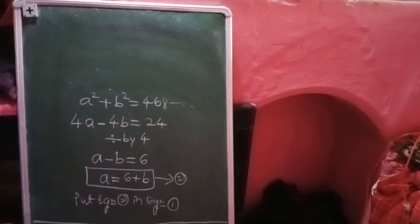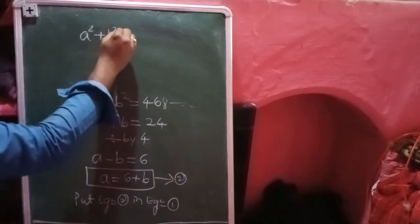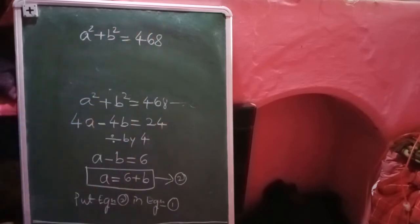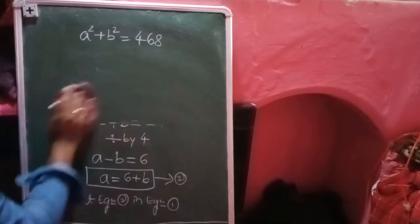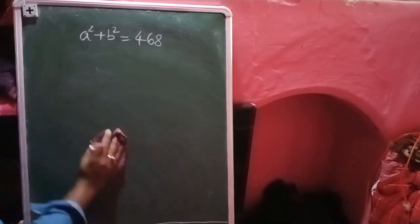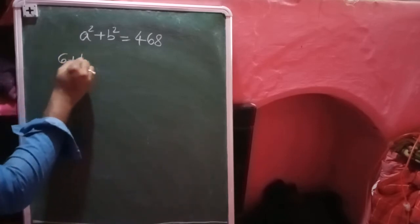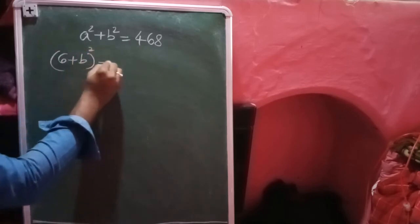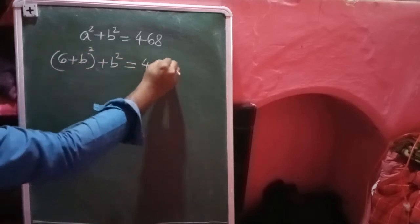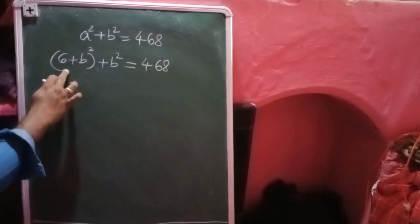Putting equation 2 into equation 1: equation 1 is a² + b² = 468. In this we have to substitute the value of a, which is 6 + b. So we substitute (6 + b)² + b² = 468.